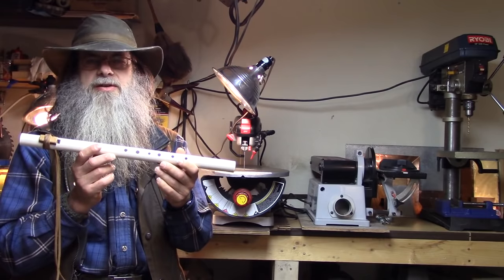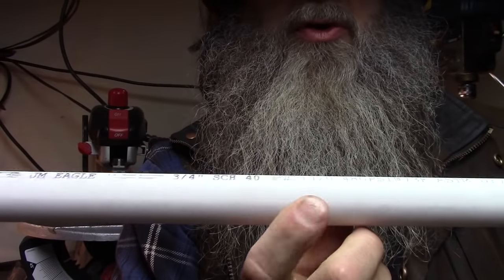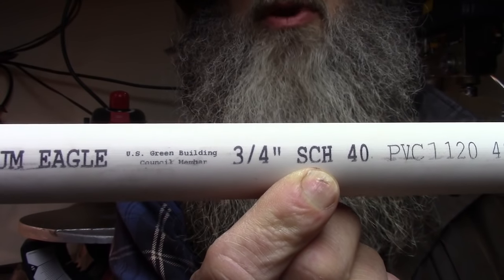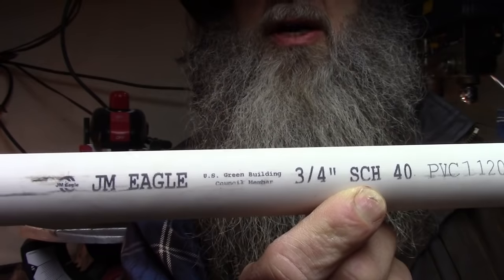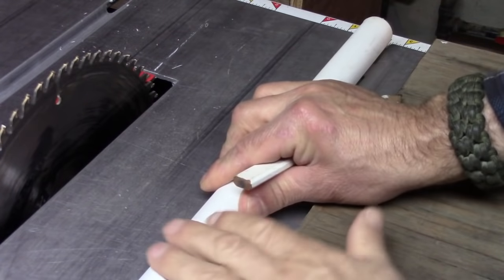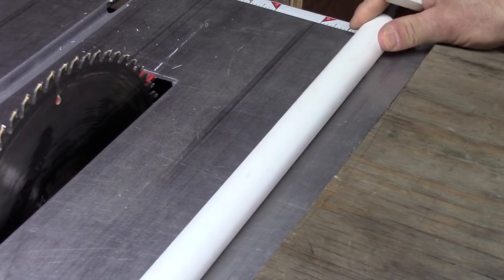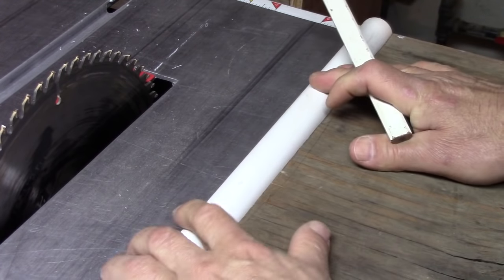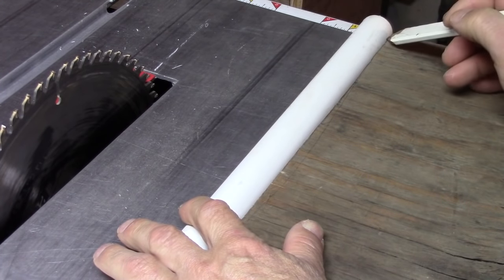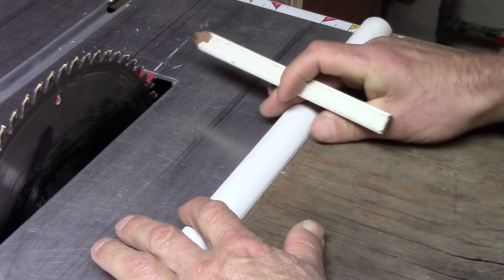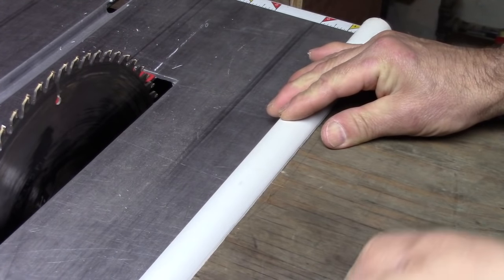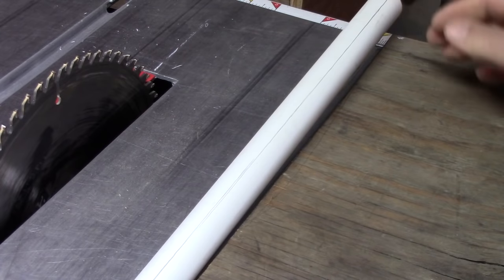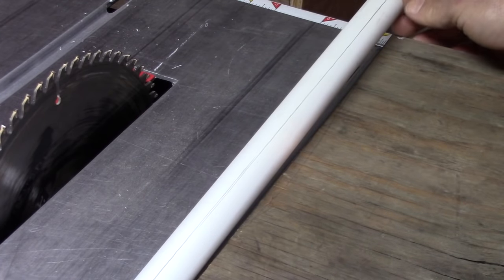We're using schedule 40 three-quarter inch PVC plumbing pipe. We will cut off a piece 18 inches long to start with. You'll want to make a straight line on this, so I'm using a piece of plywood here to mark the straight line.